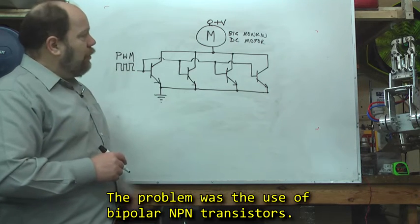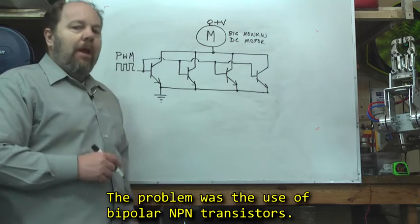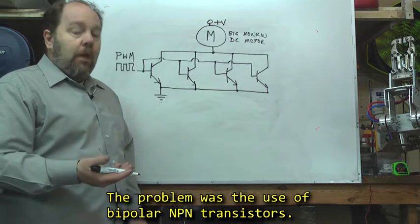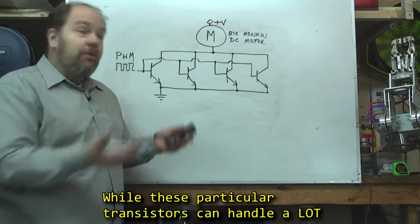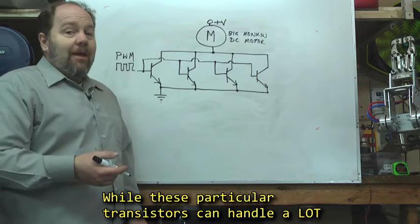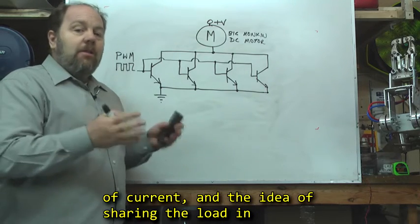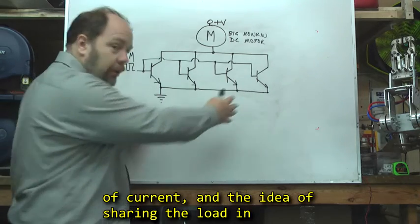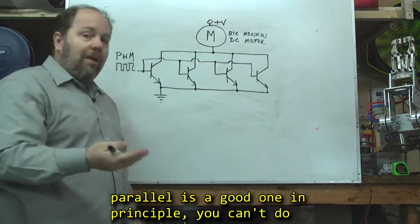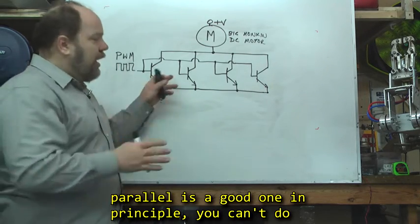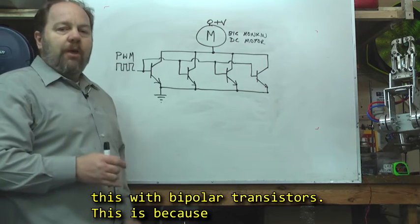The problem was the use of bipolar NPN transistors. While these particular transistors, the 2N3055, can handle a lot of current, and the idea of sharing the load in parallel is a good one in principle, you can't do this with bipolar transistors. This is because of load hogging.